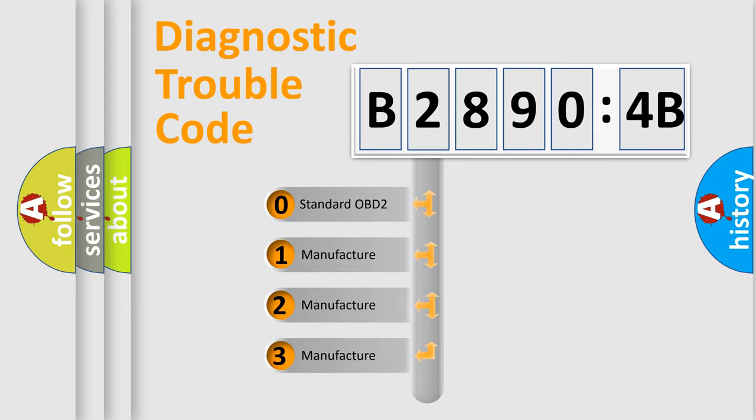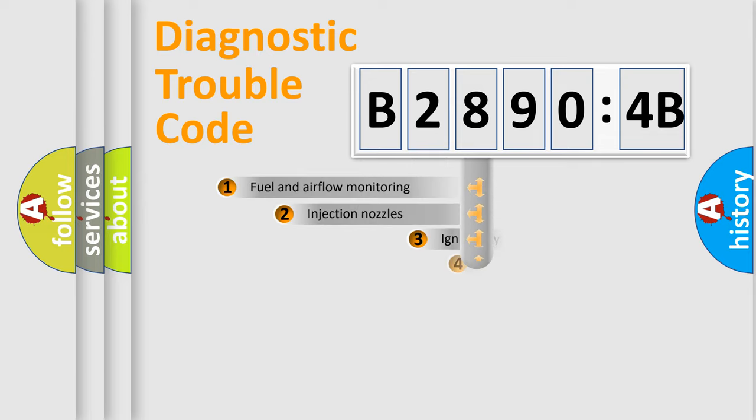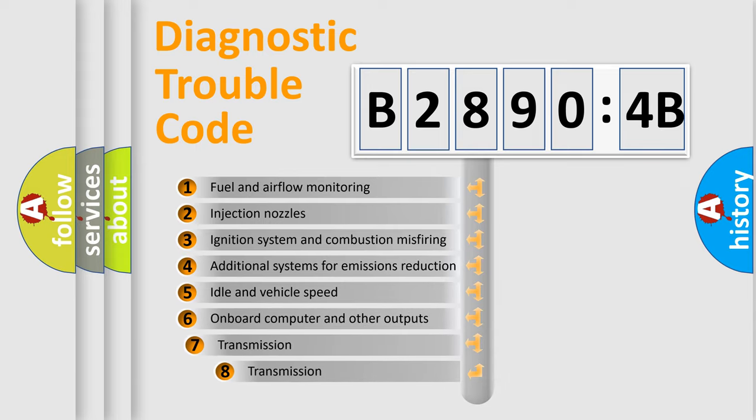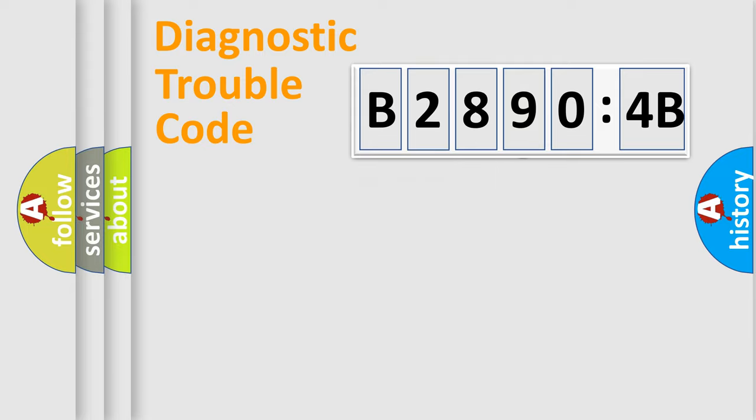If the second character is expressed as zero, it is a standardized error. In the case of numbers 1, 2, 3, it is a manufacturer-specific error. The third character specifies a subset of errors. The distribution shown is valid only for the standardized DTC code. Only the last two characters define the specific fault of the group.